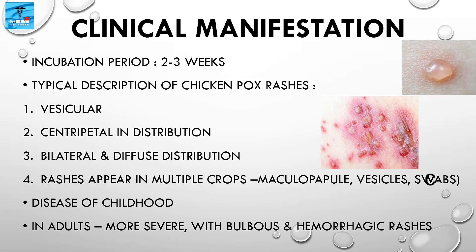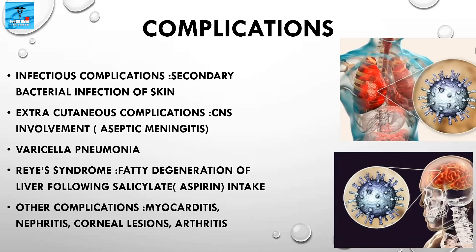Chickenpox is primarily a disease of childhood, but if it occurs in adults it will be more severe with bullous and hemorrhagic vesicles. Complications are more common in adults and immunocompromised individuals. The most common infectious complication is secondary bacterial infection of the skin. The most common extracutaneous complication is CNS involvement, including aseptic meningitis and cerebellar ataxia, which usually occurs in children.